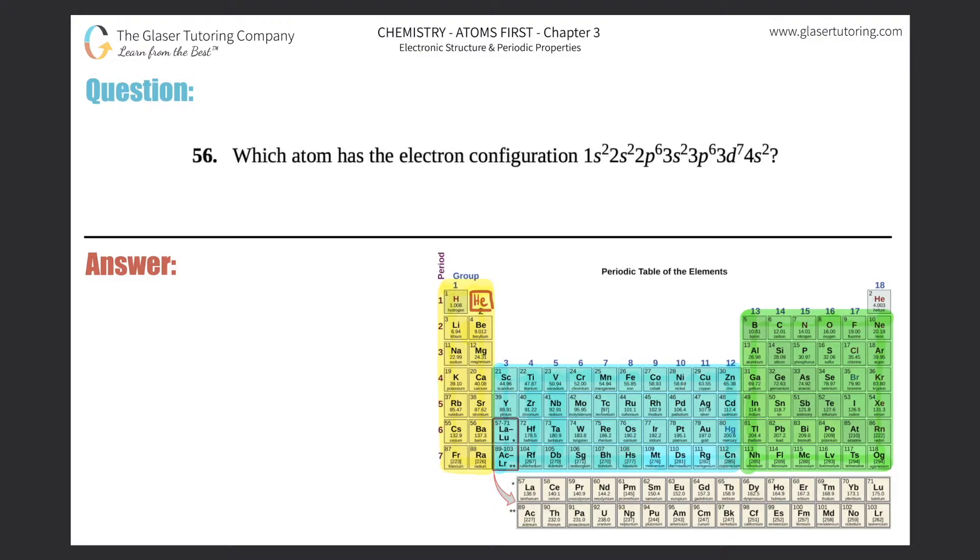Number 56: Which atom has the electron configuration 1s²2s²2p⁶3s²3p⁶3d⁷4s²? They're telling us they want to look for an atom that has this electron configuration. You should know that atom is not the same as ion. If there is an atom, it has no charge.